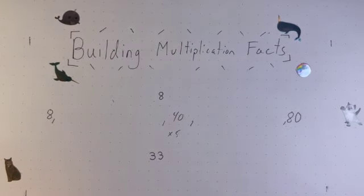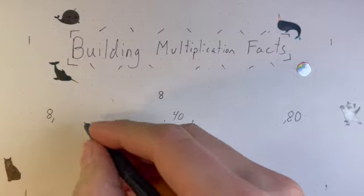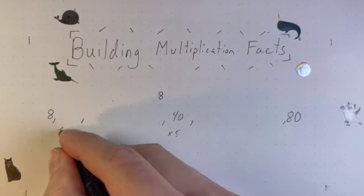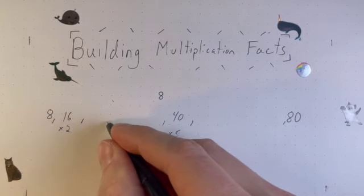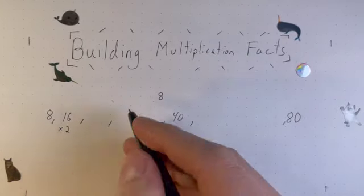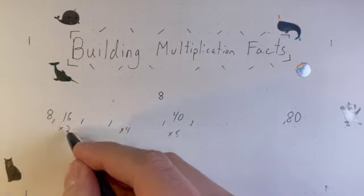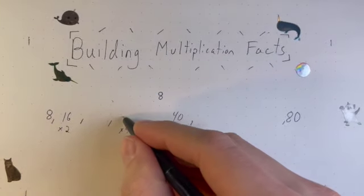The next thing I do is I use my doubles, and I start figuring out some of these other facts. So the first one would be your times 2 is just the number doubled, so 8 doubled is 16. Now the next one, your times 4, is actually your times 2 doubled, and 16 doubled is 32.